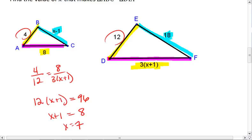Now just to double check, I also want to check out this X minus 1 and this 18. I can do, again, 4 over 12 equals X minus 1 over 18.